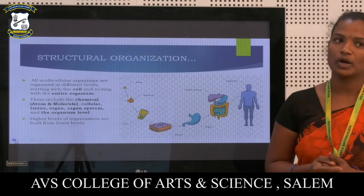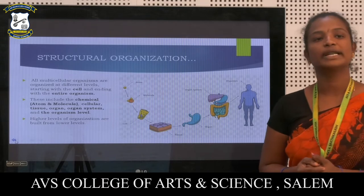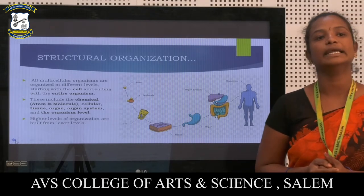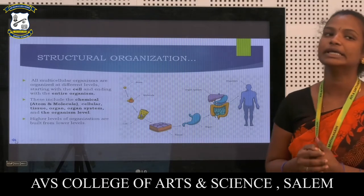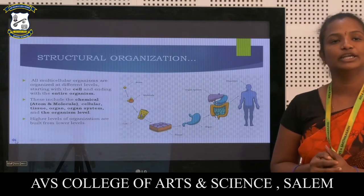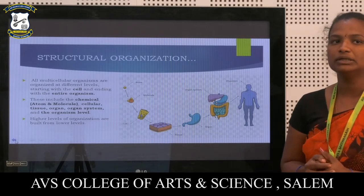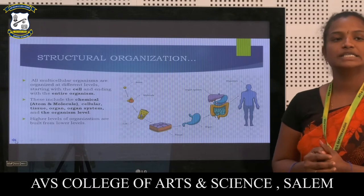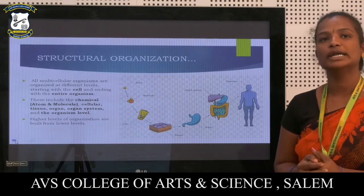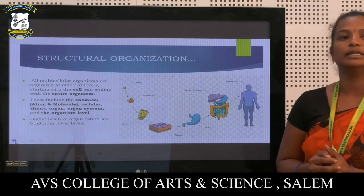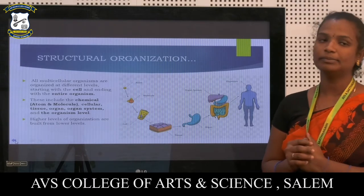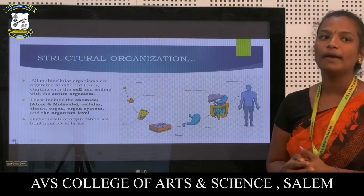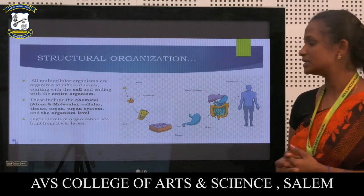All multicellular organisms are organized at different levels, starting with the cell and ending with the entire organism. These include the chemical level — atoms and molecules — cellular, tissue, organ, organ system, and the organism level. Higher levels of organization are built from lower levels.